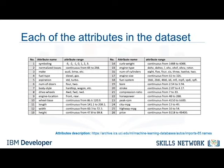You can also check out the link at the bottom of the slide to go through the descriptions yourself. The first attribute, symboling, corresponds to the insurance risk level of a car. Cars are initially assigned a risk factor symbol associated with their price. Then, if an automobile is more risky, this symbol is adjusted by moving it up the scale. A value of plus 3 indicates that the auto is risky; minus 3, that it's probably pretty safe.